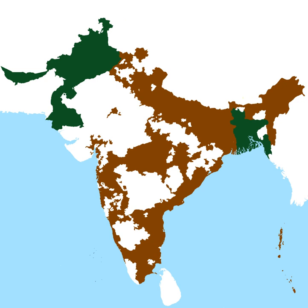On 4 June 1947, Mountbatten held a press conference in which he addressed the question of the Princely States, of which there were over 570. The treaty relations between Britain and the Indian States would come to an end, and on 15 August 1947, the suzerainty of the British Crown was to lapse. They would be free to accede to one or the other of the new dominions or to remain independent.